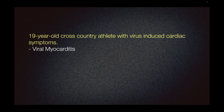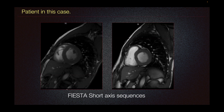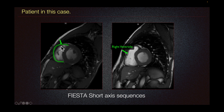This is a case of a 19-year-old cross-country athlete with virus-induced cardiac symptoms concerning for viral myocarditis. The patient received cine images of the mid-heart short axis. Here on these two images we see mild dilation of the right ventricle but normal appearing left ventricle with normal thickness of the left ventricular myocardium.